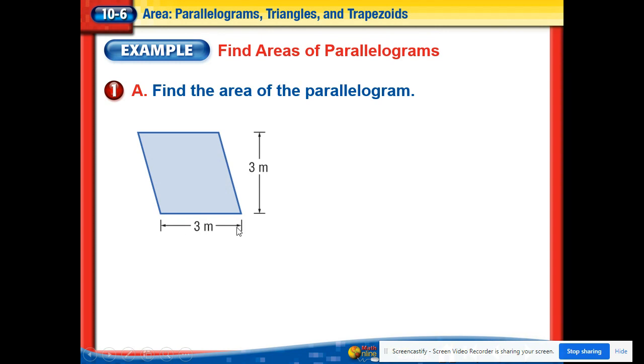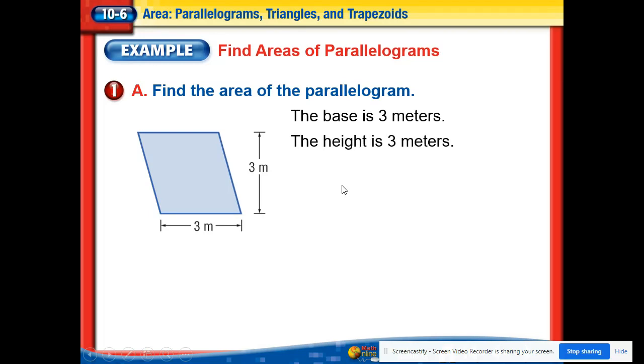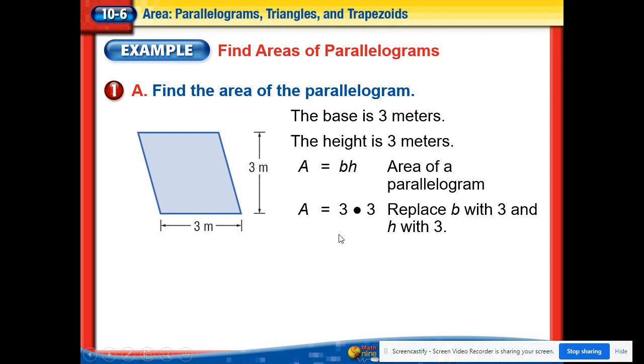So here we have a base of 3 and the height of 3 also. Really kind of easy start for us. So base is 3, the height is 3. So we're just doing base times height, or in this case 3 times 3, which would give us 9. And of course we want to label it 9 square meters.